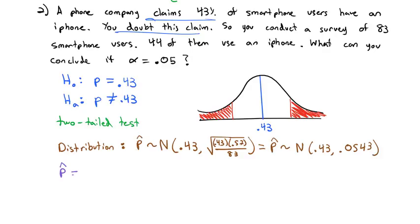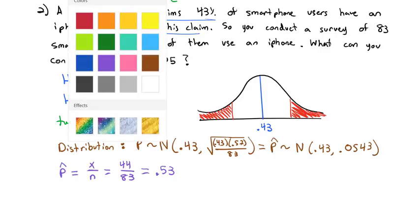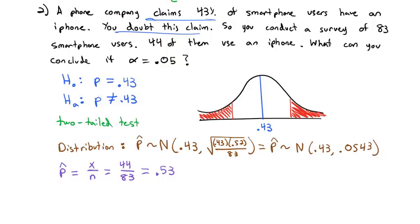What is our sample proportion? Our sample proportion is going to be x divided by n — 44 out of 83 people who use iPhones — and that's going to be 0.53. Since we know our proportion is 0.53, on the picture off to the right I'm going to put 0.53. That is the x value where the red shading starts. We don't know the value on the left; since our proportion was more, we put it on the right.